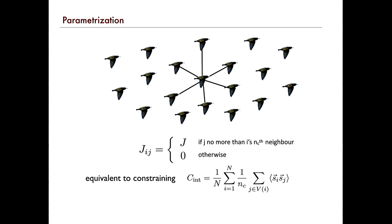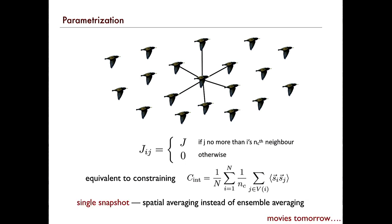Right now we have this interaction matrix — which bird speaks to which bird with what strength — and that's rather a lot of parameters. So we'd like to simplify our life and parametrize this interaction matrix by saying birds interact with each other if they are no more than NC neighbors. The bird counts to NC, listens to and integrates information with equal strength from all of these neighbors, and ignores everybody else. This is equivalent to constraining the correlation function over NC nearest neighbors, averaged over the whole flock. We're going to use a single velocity snapshot and do spatial averaging instead of ensemble averaging.